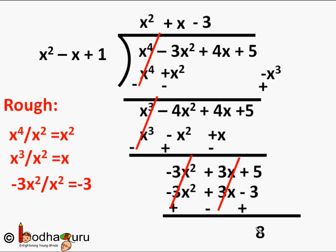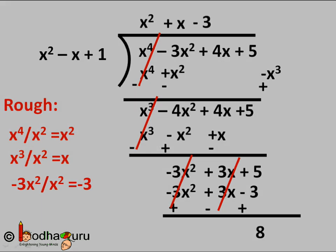We cannot divide anymore, as the degree of the remainder is less than the degree of the divisor x² minus x plus 1 — the degree of the remainder is 0, while the degree of the divisor is 2. So x⁴ minus 3x² plus 4x plus 5 divided by x² minus x plus 1 gives x² plus x minus 3 as the quotient and 8 as the remainder. That's all in this video, bye bye.